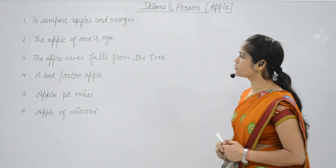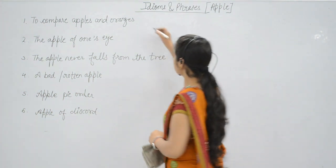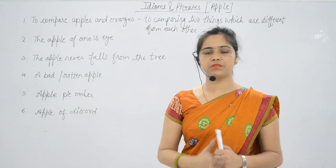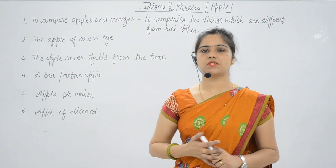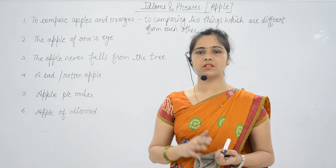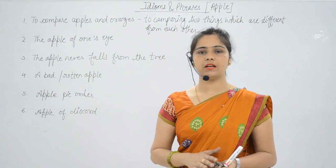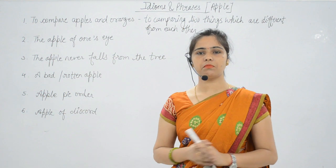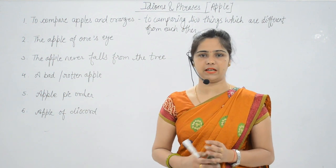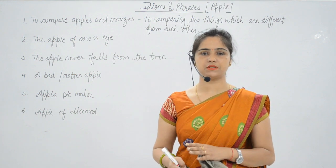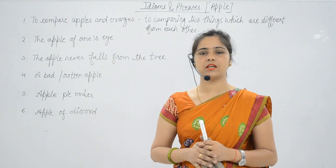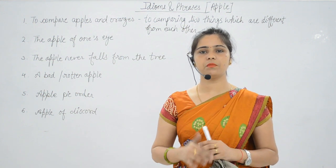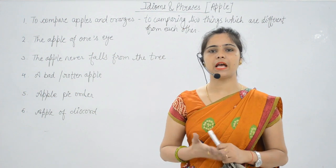The first is 'to compare apples and oranges.' It means to compare two things that are completely different from each other in every way. For example, don't compare a bicycle and a motorcycle — they are both different from each other, they are apples and oranges. So comparing things which are very different from each other is called apples and oranges.